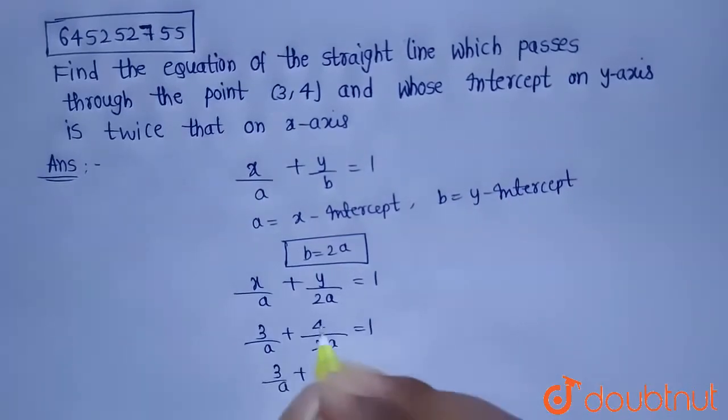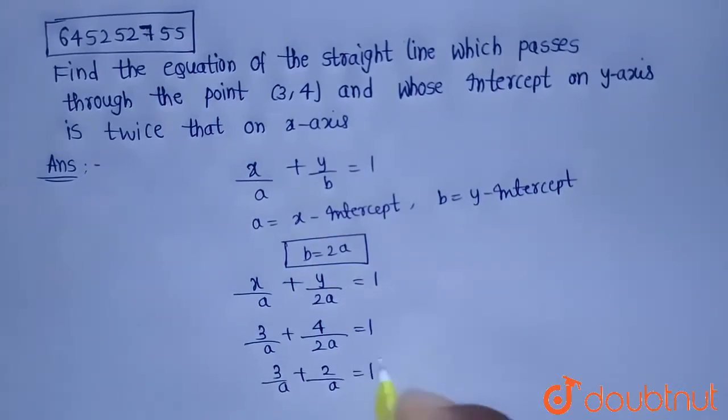So, 3/a plus this 4 will get cancelled with 2 in 2 times. So, 2/a equals 1. So, from this 5/a = 1. That is a equals 5.